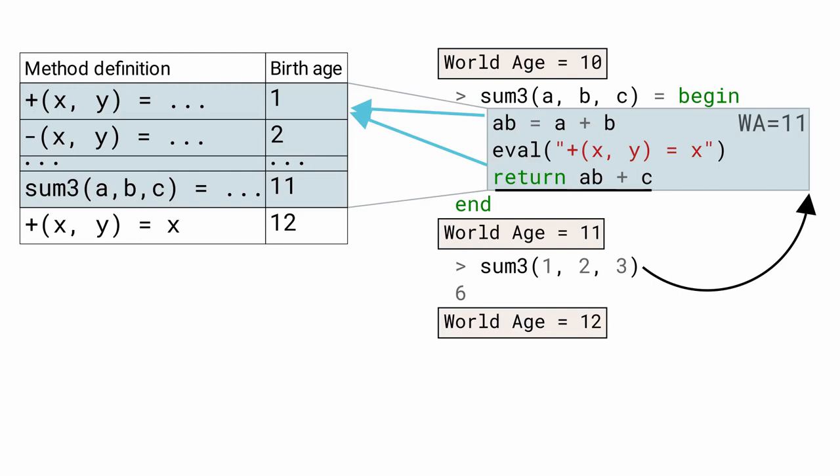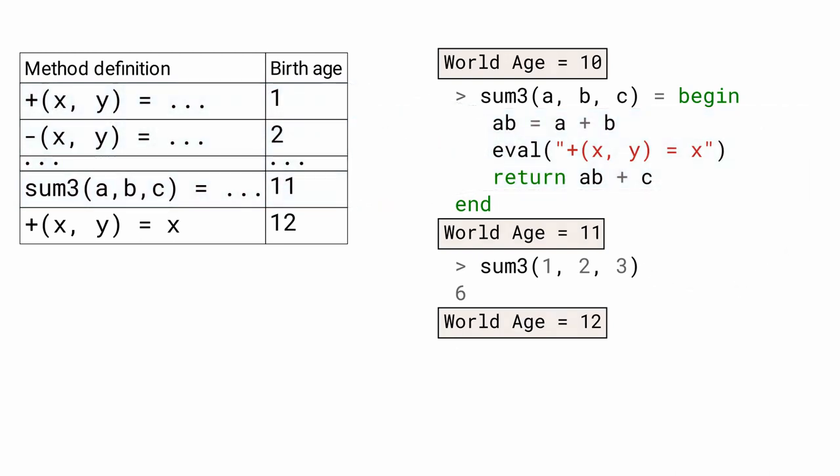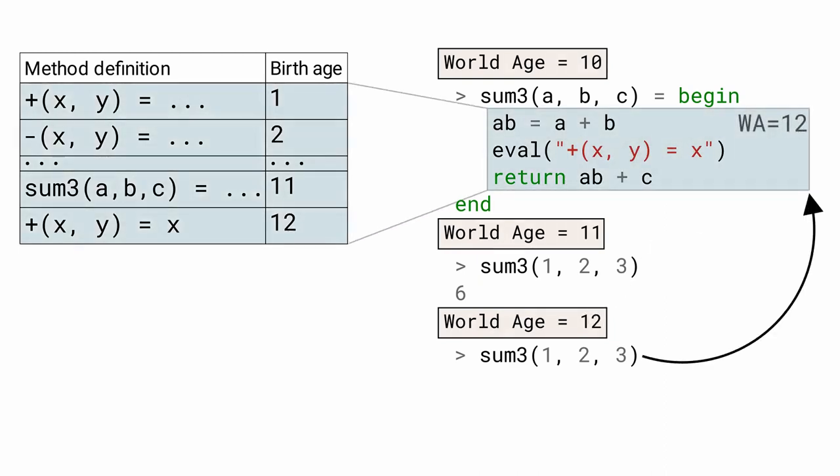But once the first call to sum3 is completed, the second call starts at world age 12, where the new definition of plus is now visible. Therefore, a plus b dispatches to this latest definition.